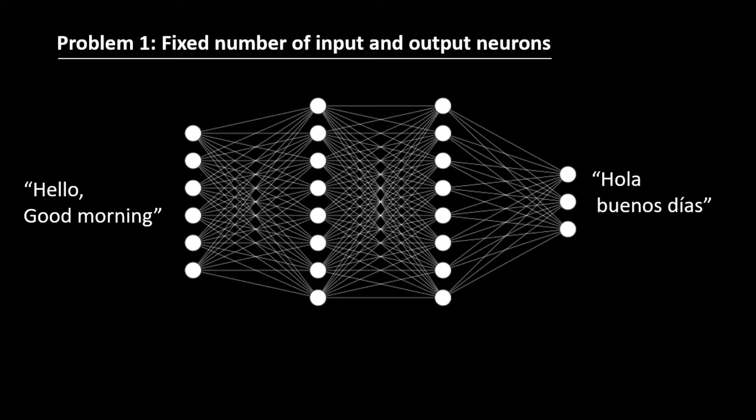Now, here we cannot use Artificial Neural Network because if you remember, Artificial Neural Network has fixed number of neurons in the input and the output. So we cannot feed variable length input data to a model which accepts fixed length input.